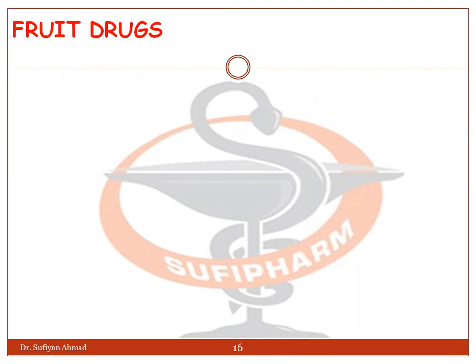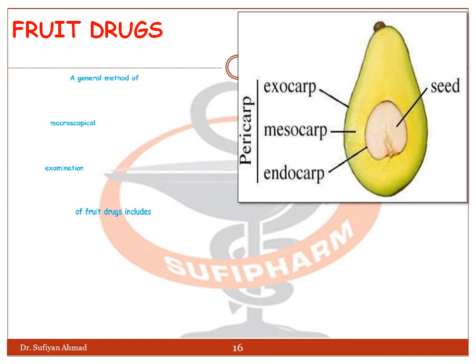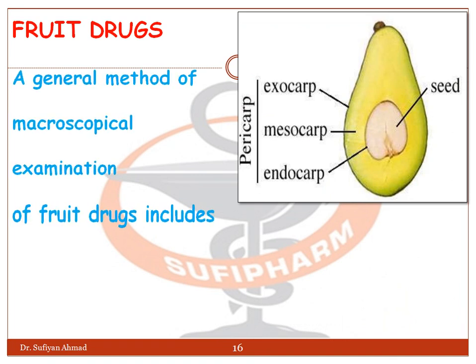The fruit drug: a general method of microscopical examination of the fruit drug includes three parts — endocarp, mesocarp, and exocarp — collectively called the pericarp. The fruit also consists of seeds.